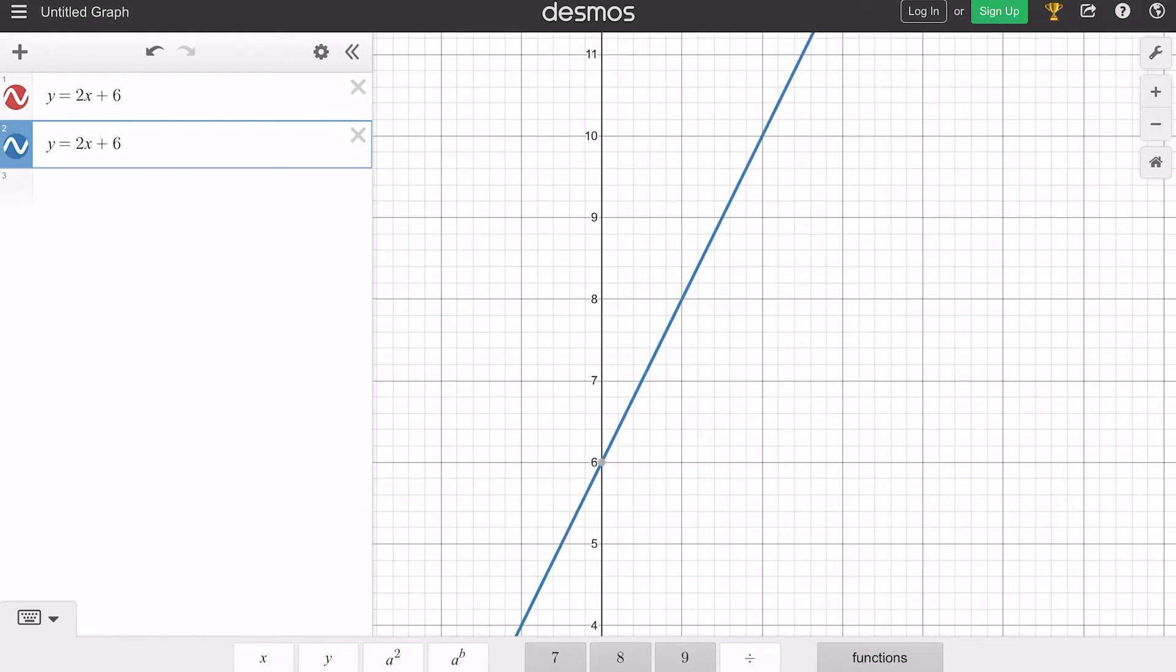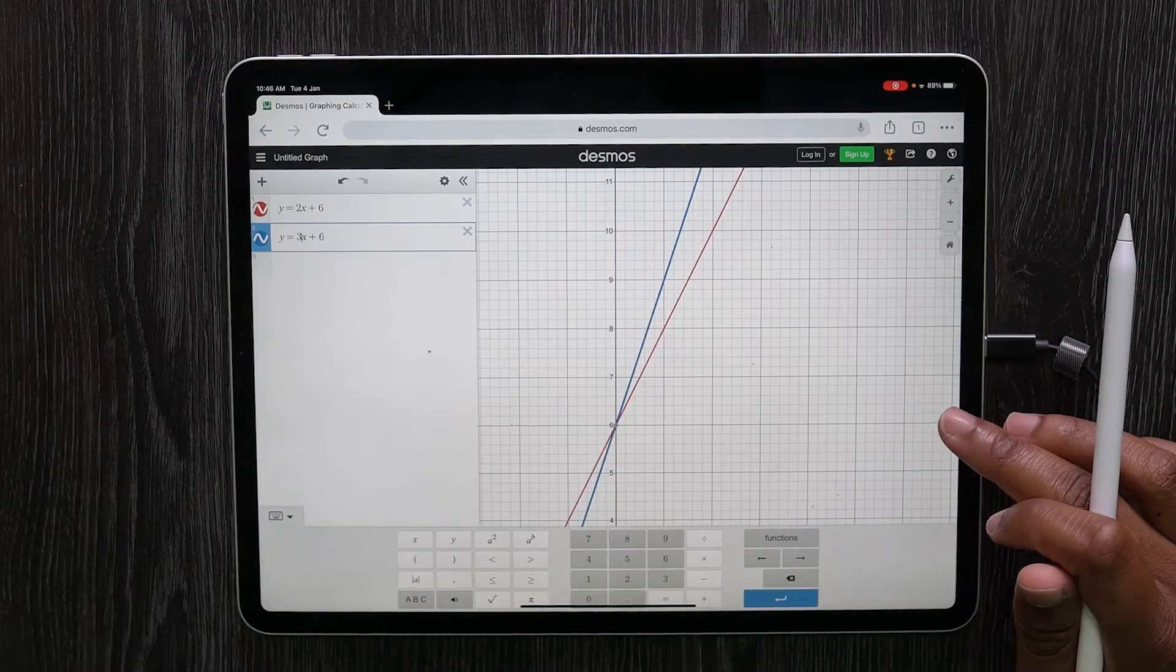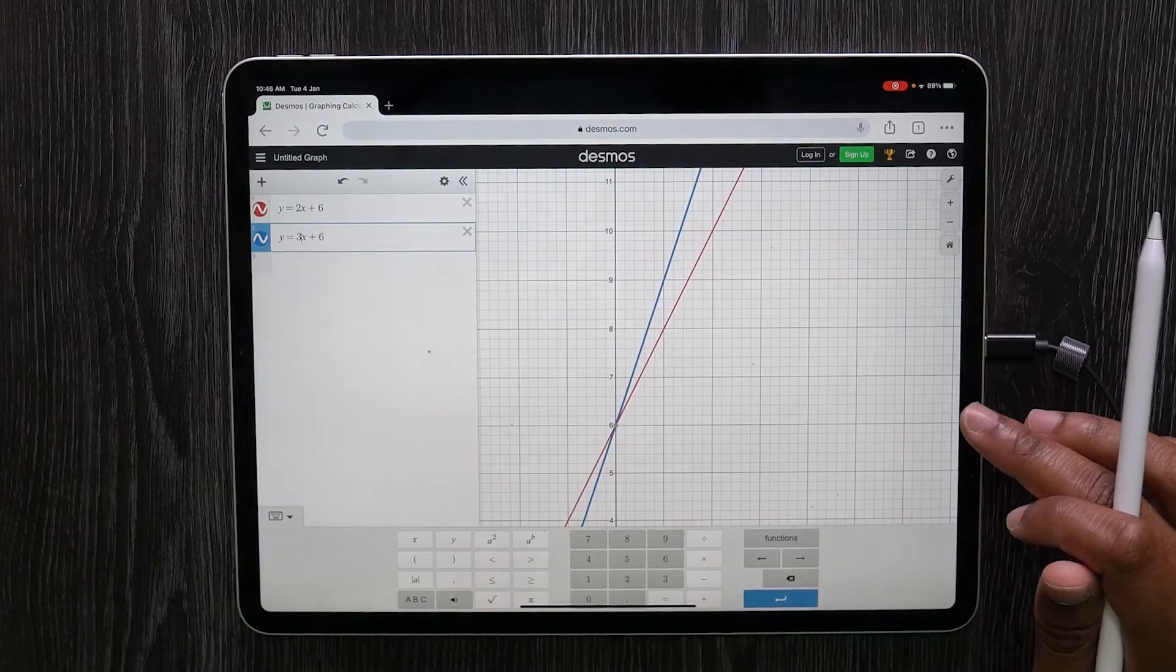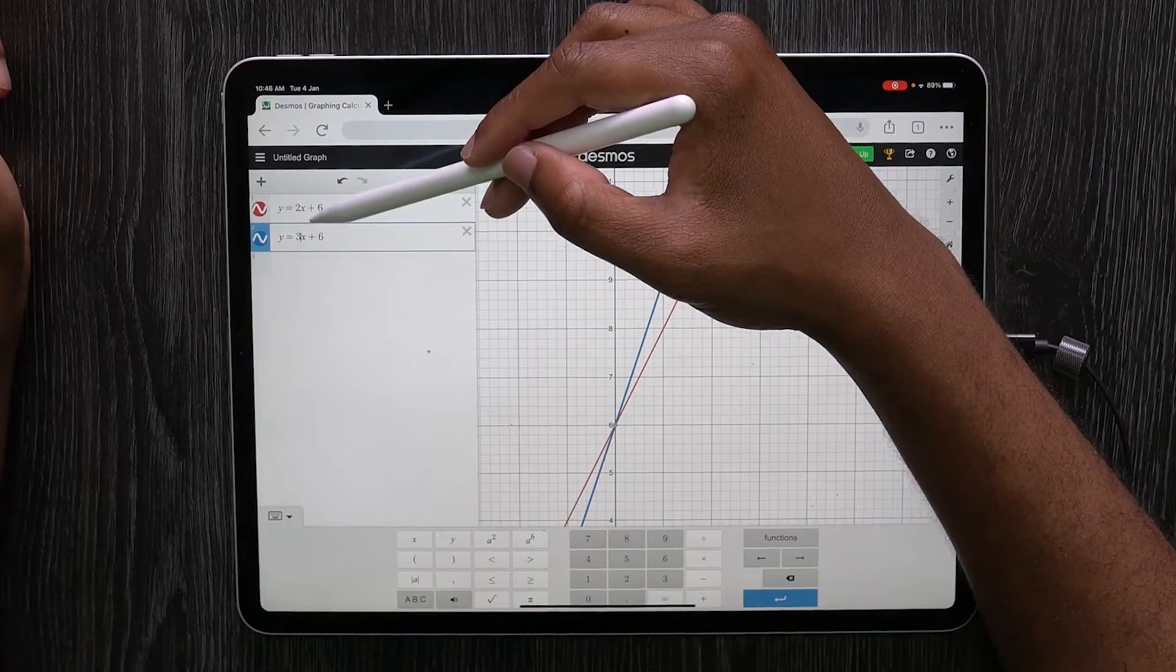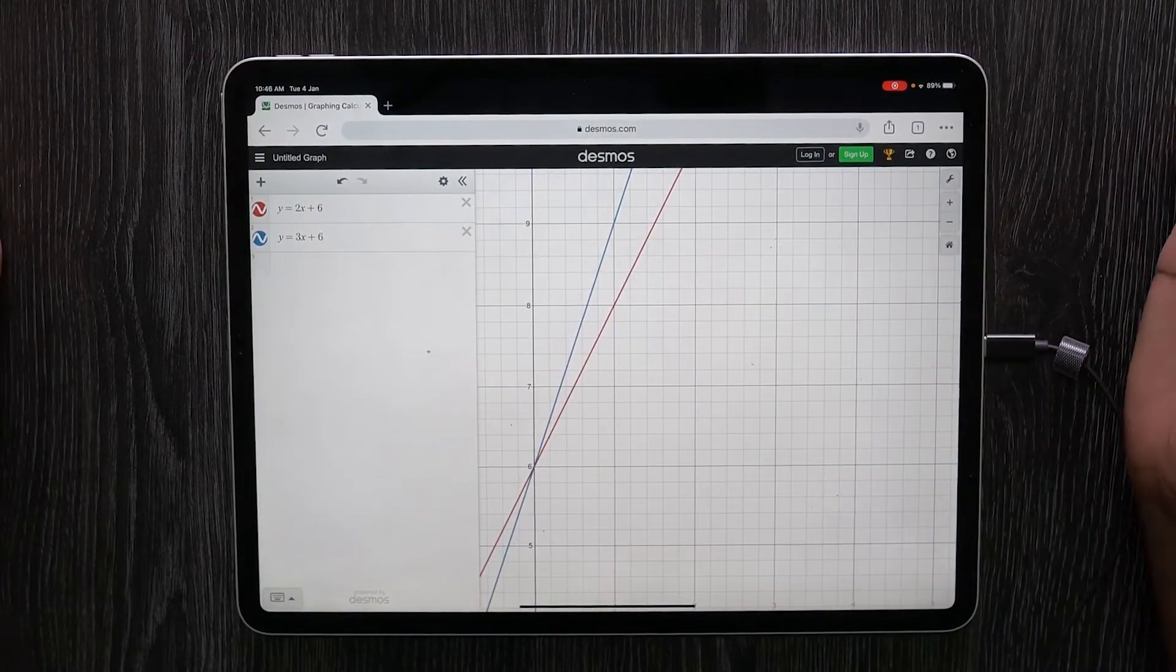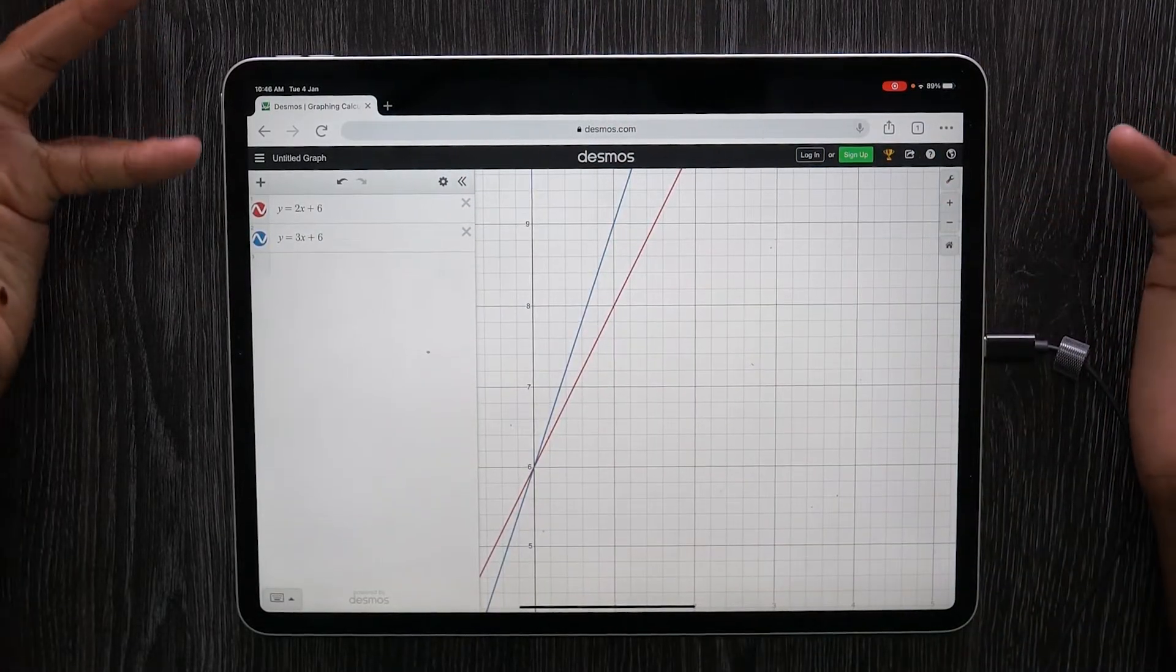But if I change the 2 to 3, the blue line is steeper. The hill on the blue line is steeper. So this number in front of the x controls the gradient. Gradient is just a word for steepness.